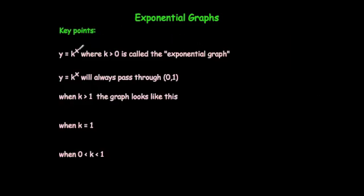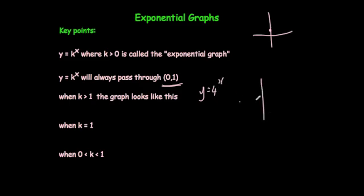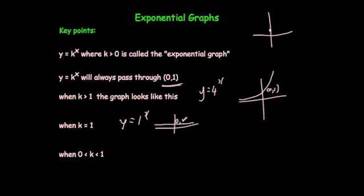Let's recap exponential graphs. An exponential graph is whenever you've got y equals k to the x, a number to the power of x, where k has got to be bigger than 0. It will always pass through the coordinate (0, 1) because any number to the power of 0 is 1. Whenever k is bigger than 1, it goes up steeply and gets very big very quickly. Whenever k equals 1, it's just a flat line through (0, 1). And whenever k is a decimal between 0 and 1, the graph is the other way around — it goes through (0, 1) but comes down exponentially. And that's what exponential graphs are.